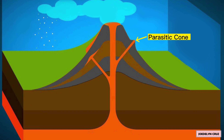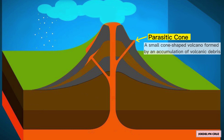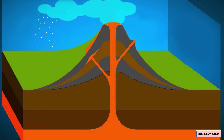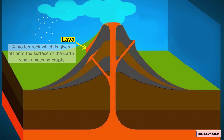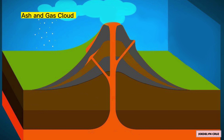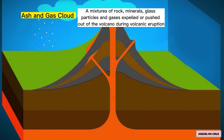A parasitic cone is a small cone-shaped volcano formed by an accumulation of volcanic debris. Lava is a molten rock which is given off onto the surface of the earth when a volcano erupts. Ash and gas cloud is a mixture of rock, minerals, glass particles, and gases expelled or pushed out of the volcano during a volcanic eruption.